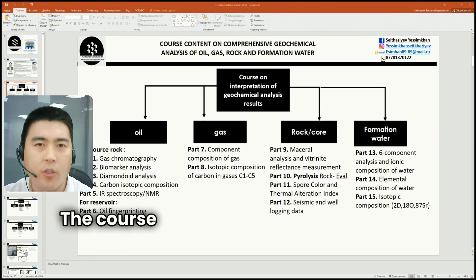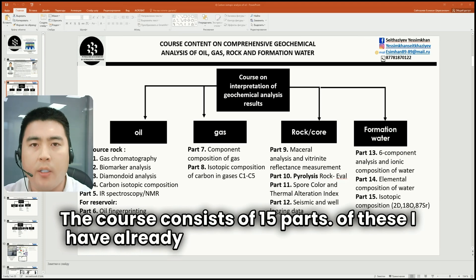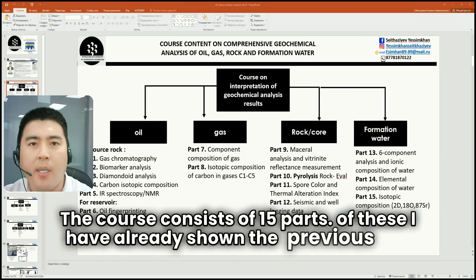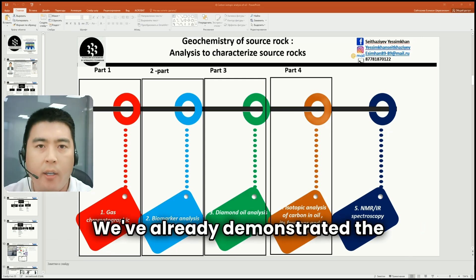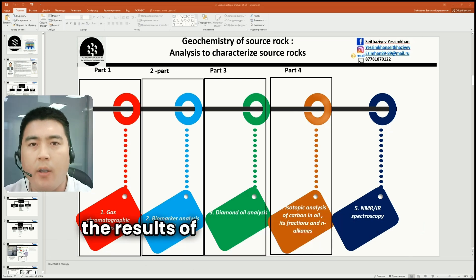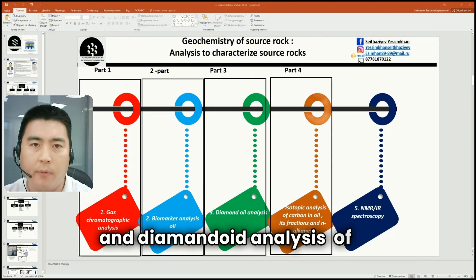The course consists of 15 parts. I have already shown the previous three parts on oil. We've already demonstrated the interpretation of the results of gas chromatography, biomarker, and diamondoid analysis of oil.